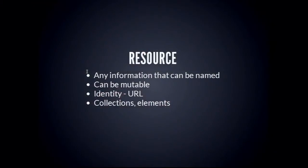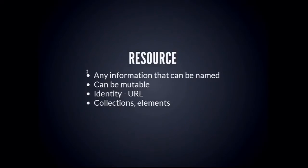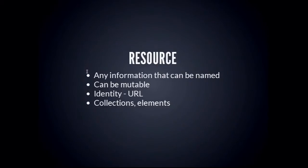A resource is any information that can be named and distinguished from other information. A resource can be mutable — it can change state over time — but it maintains an identity throughout its lifespan, an identity that doesn't change. That identity is expressed by a unique URL. The two main types of resources are collections — for example, all users of my application — and elements, such as a particular user named Bob.